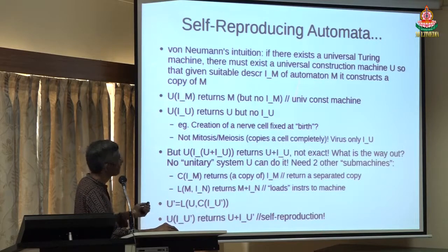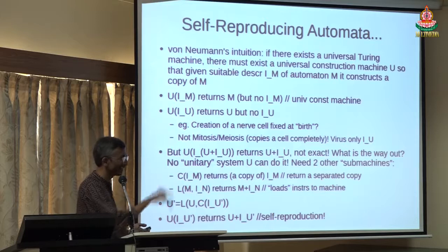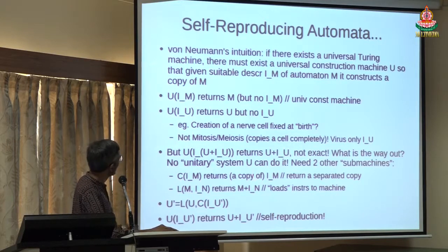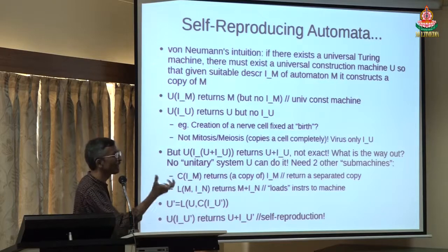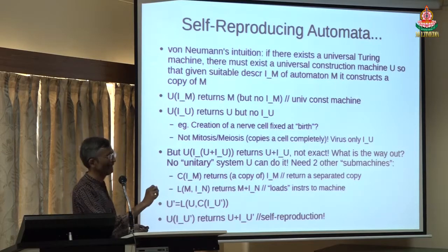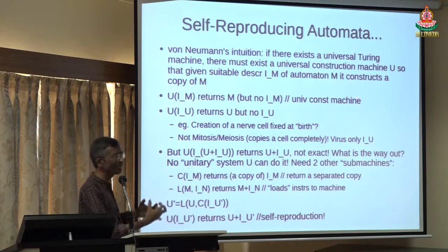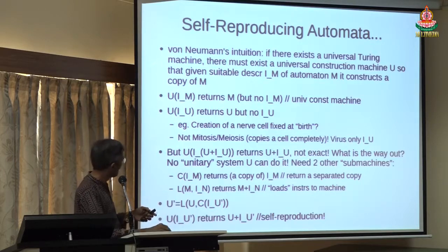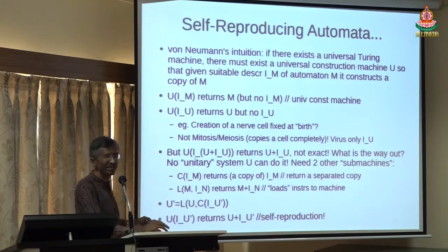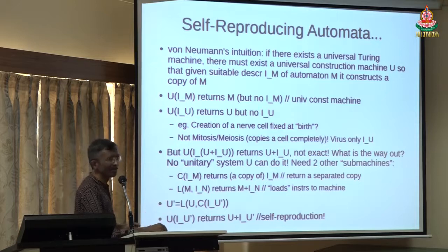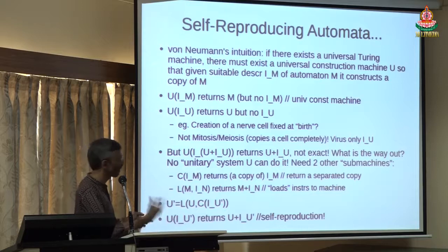Von Neumann showed that you need about 63 states and other components. This proves that you cannot have a totally unitary system — just a single conceptual idea — that reproduces itself. It actually requires auxiliary systems. When they are put together, you find a complete self-reproducing system. And surprisingly, this idea is also present in Indic thinking — by which I mean the Hindu, Buddhist, and Jaina ways of thinking, all the thinking that has come from this country.